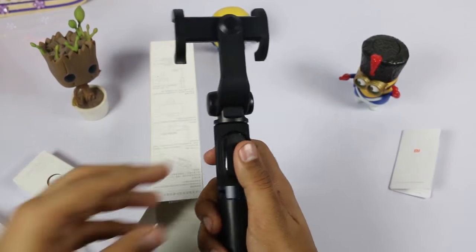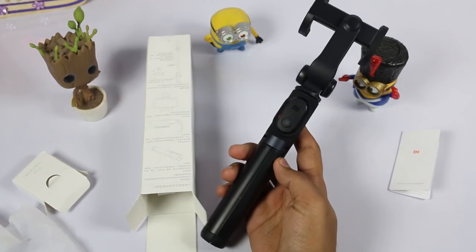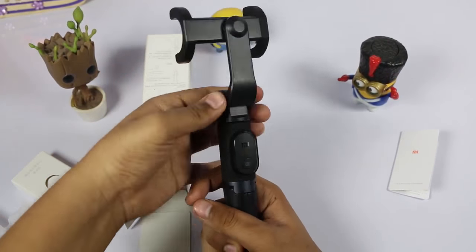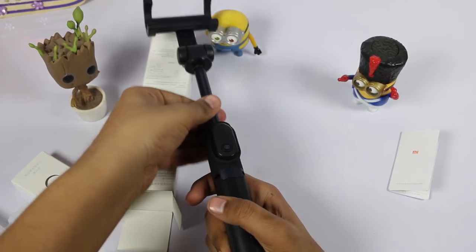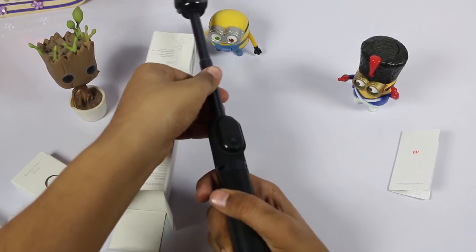We can extend the Xiaomi stick to two levels, making it extend up to 20 inches, which is good enough for taking selfies as well as using it as a monopod.